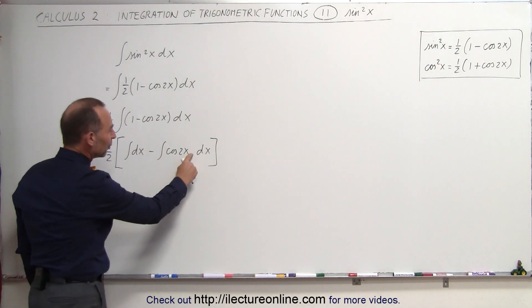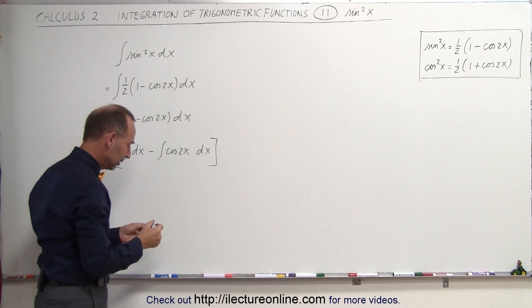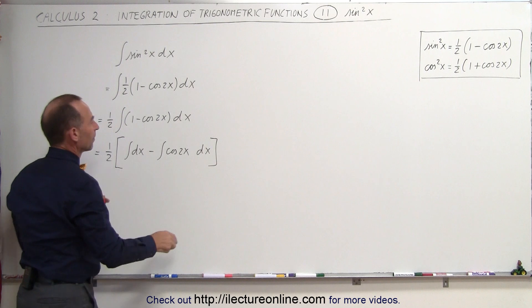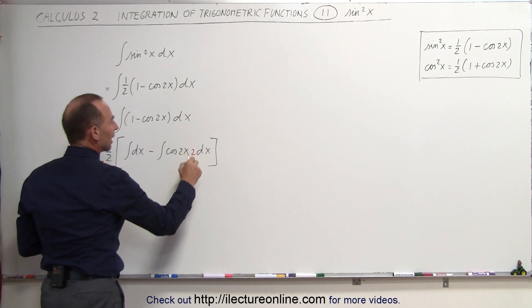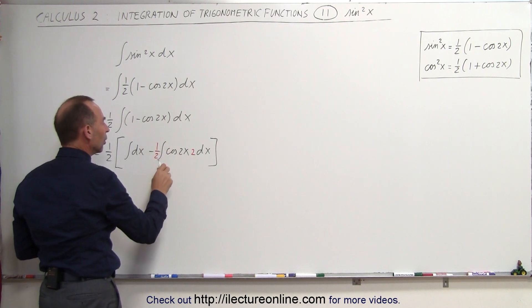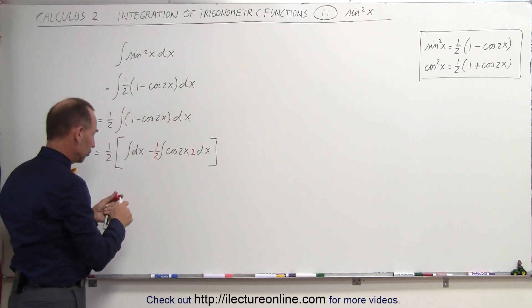Notice I left a little bit of room there, because I realized that if I want to integrate cosine 2x, I need a 2 dx here. If I multiply this times 2, I also have to divide it by 2 to compensate for that. So now I can go ahead and integrate cosine 2x.